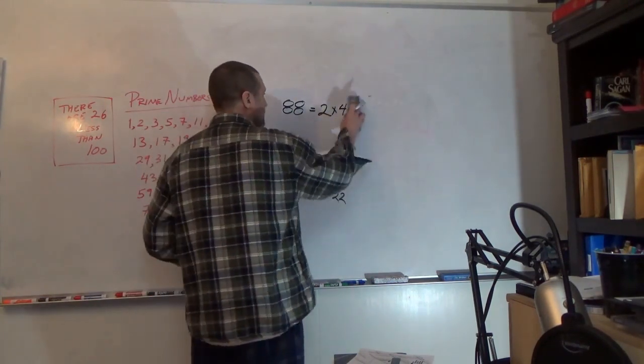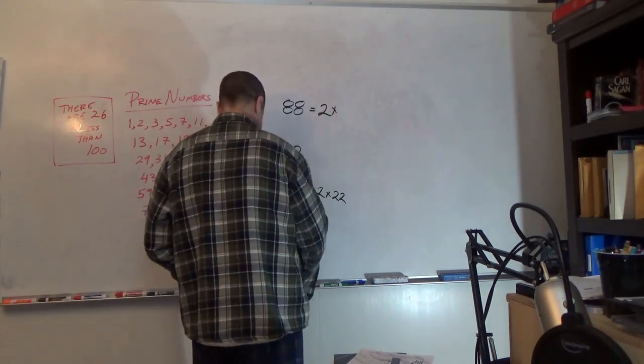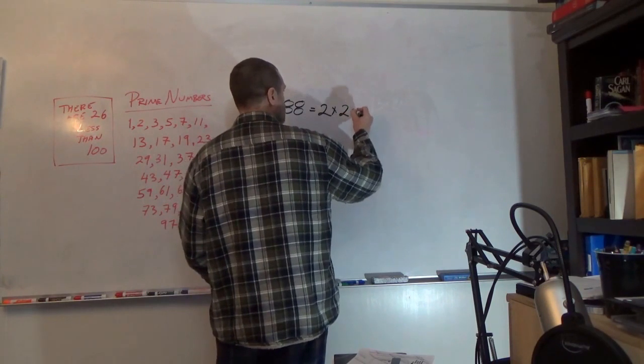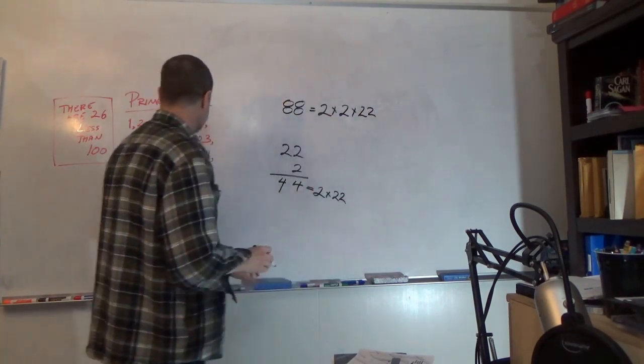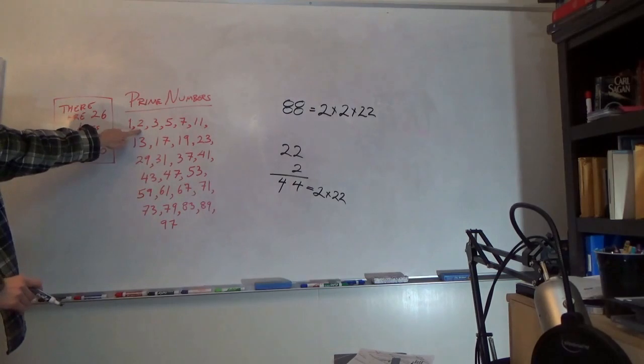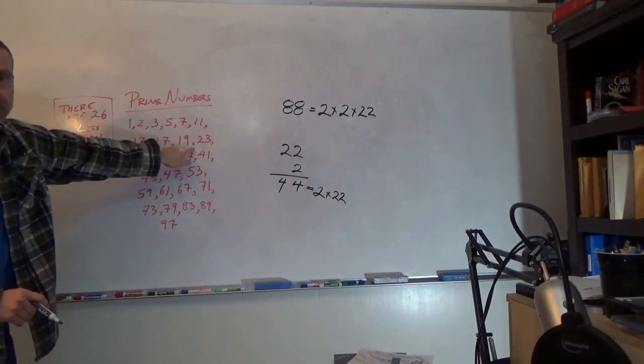So I'm going to substitute that 2 times 22. So 2 is a prime number, but 22 is not.